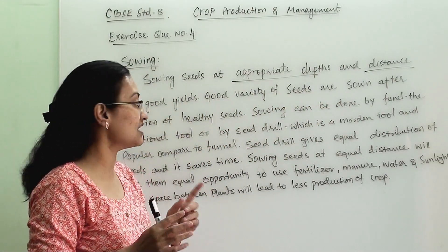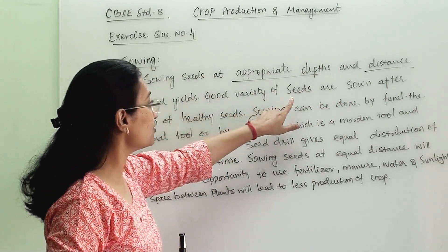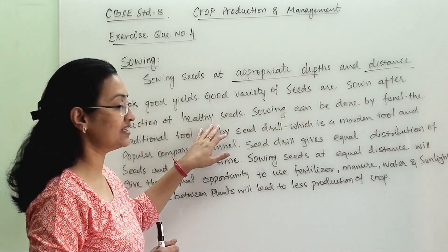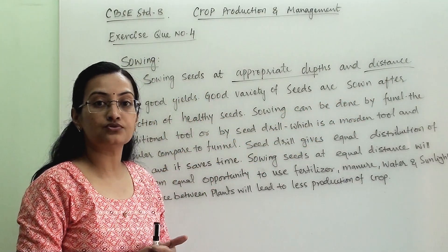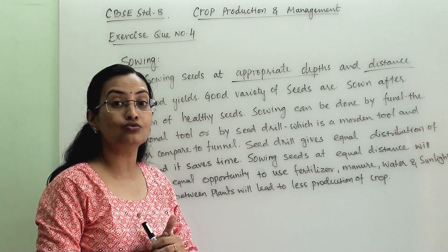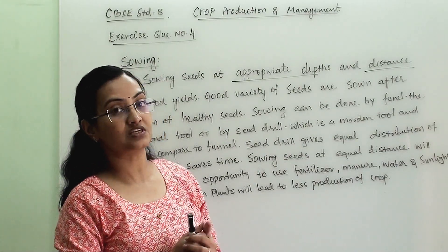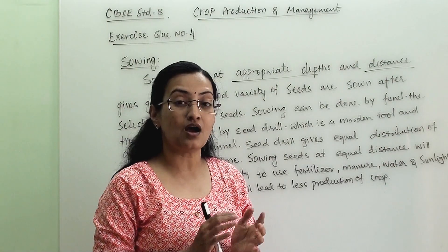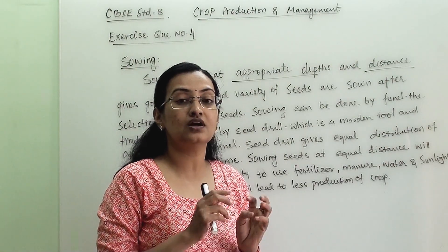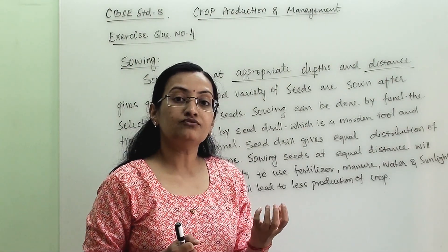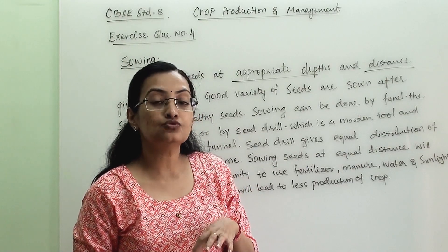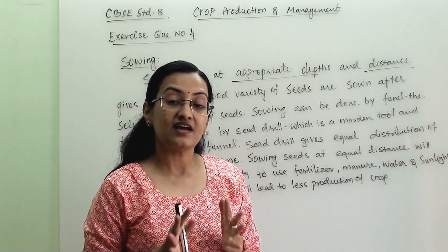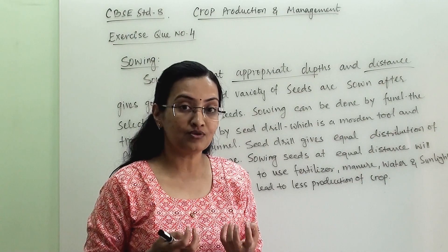Equidistance of the seeds is important. Good variety of seeds are sown after the selection of healthy seed. This is a very important procedure — how to select good quality seed. We take some seeds and put them into water. The seeds which sink are healthy because they are not hollow from within.